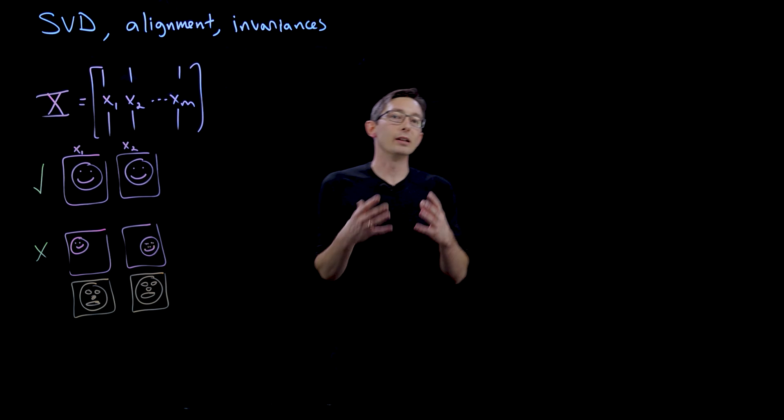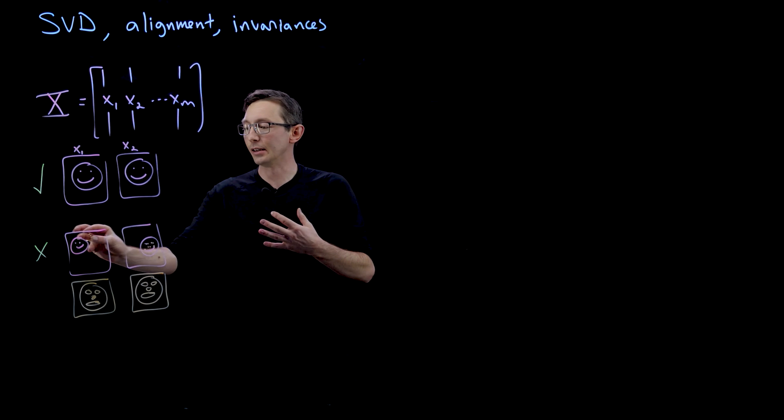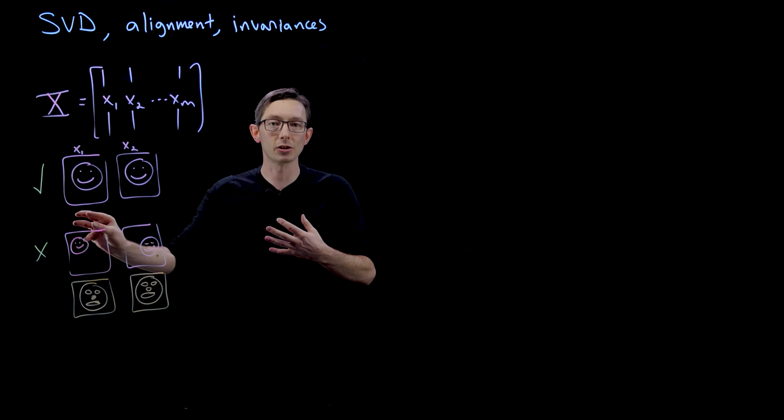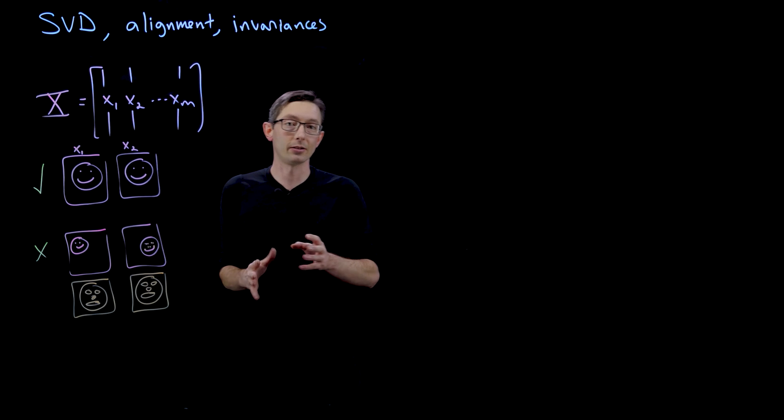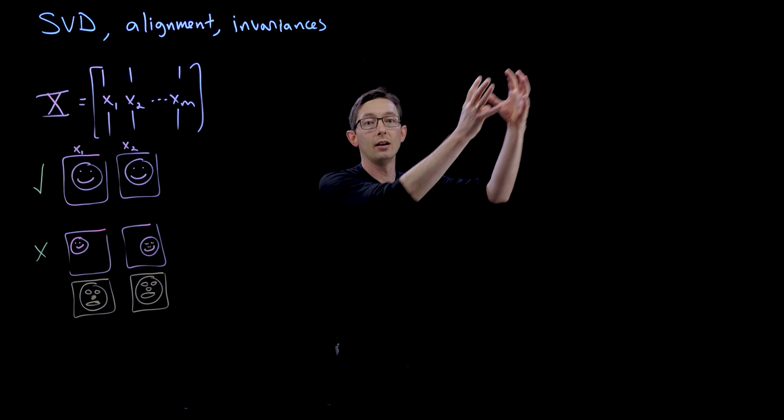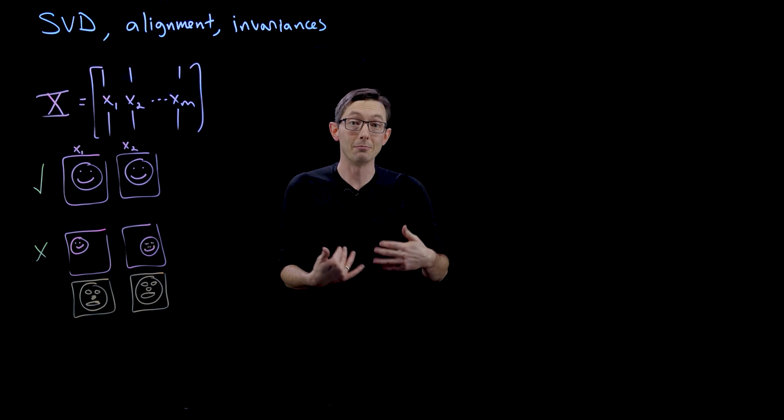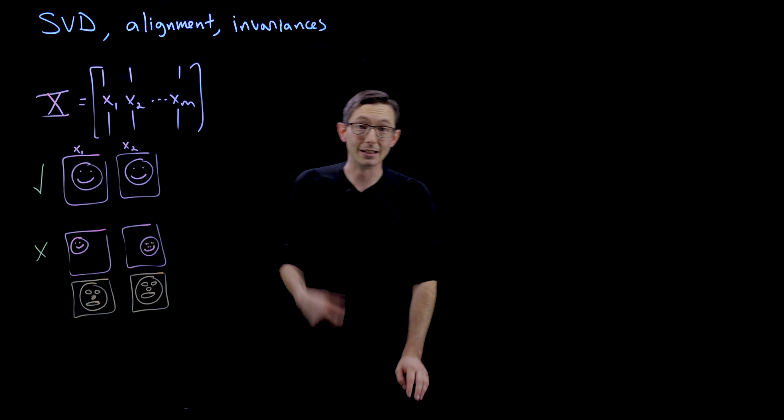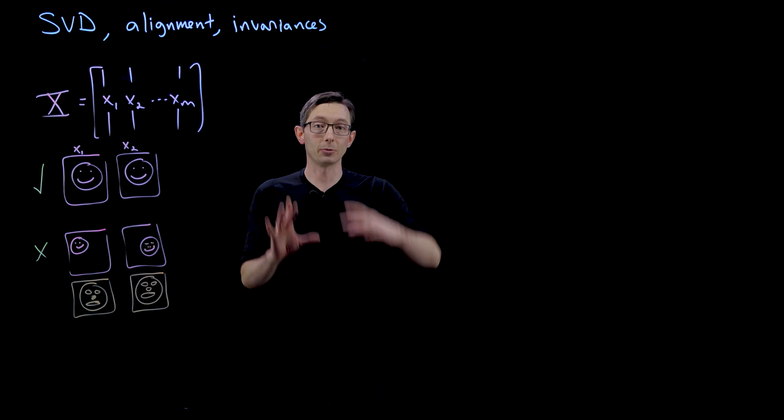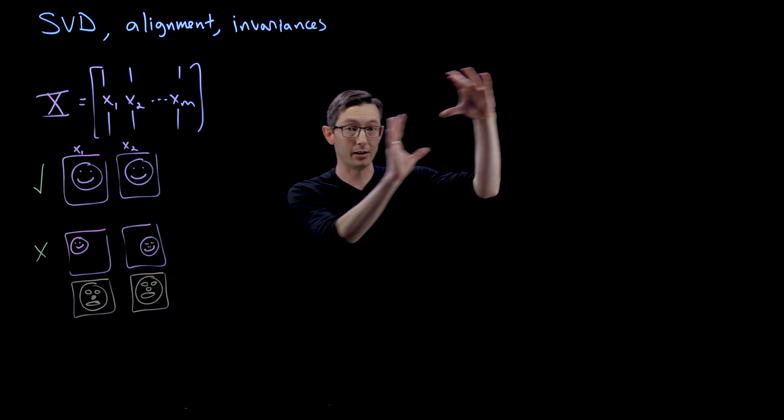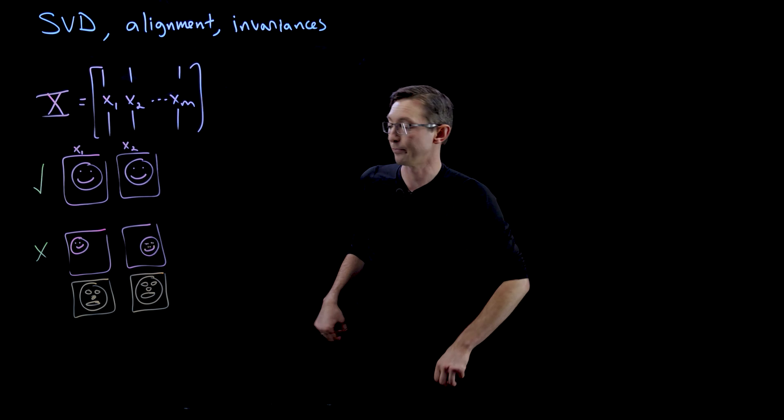So we as humans have this innate ability to recognize translational invariance in images. So if I see an image of a truck over here or a truck over here, it doesn't make much of a difference to me. It makes a huge difference to the SVD and to image classification. So you have to really crop and align based on the object you're looking for.